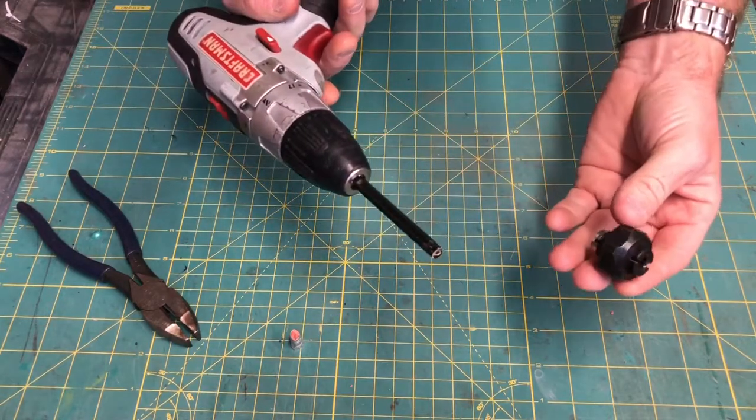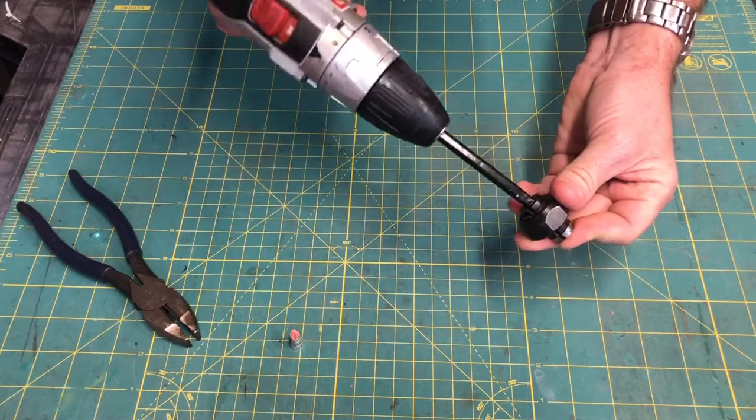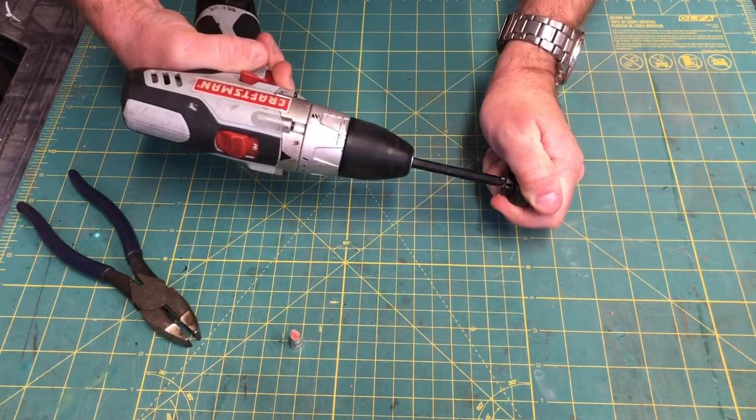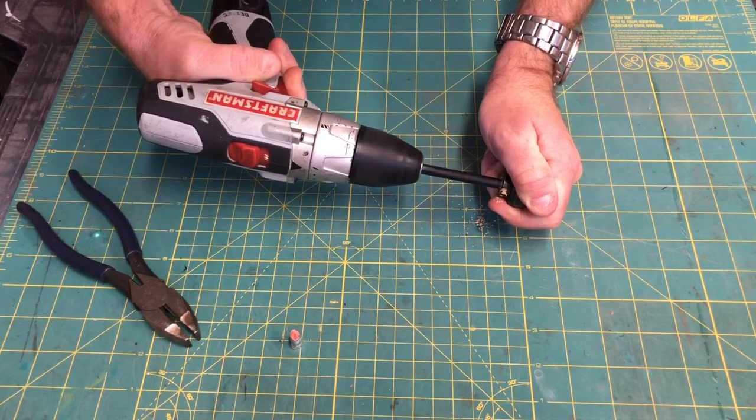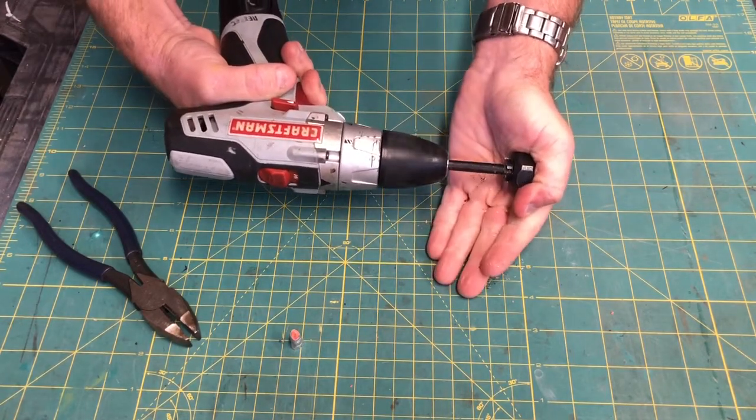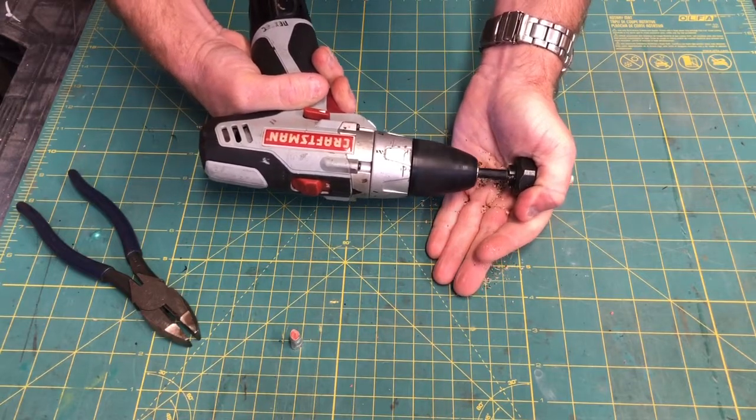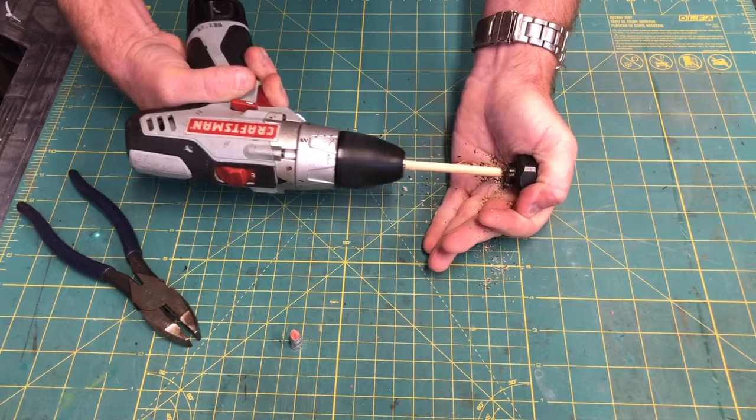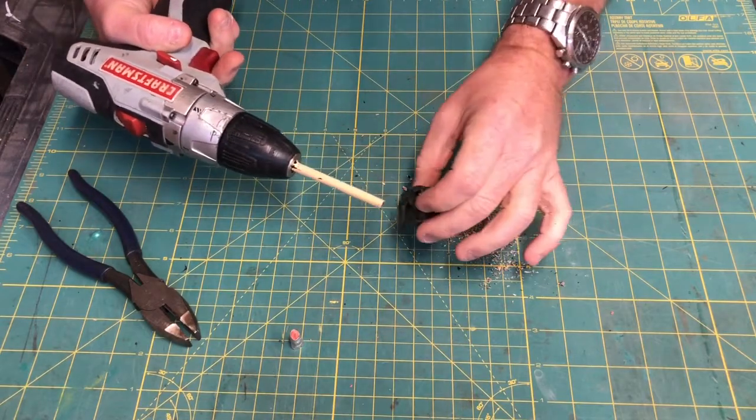Now take the collet—you're basically going to use it like a pencil sharpener. Hold on to it, slowly start. As it's going in, make sure you readjust your hand so you don't stab yourself. Push it all the way in. Voila! It's like a brand new sharpened pencil, sort of.